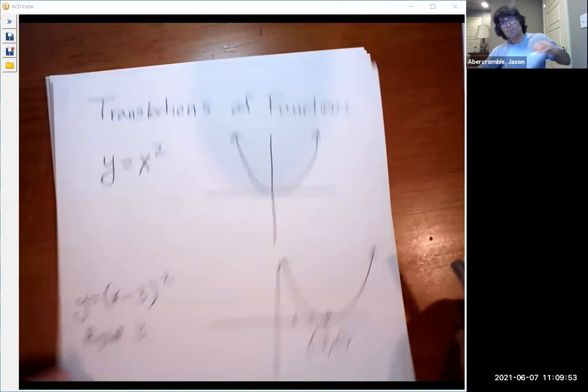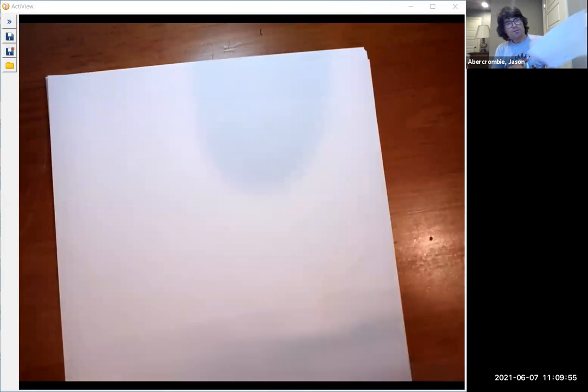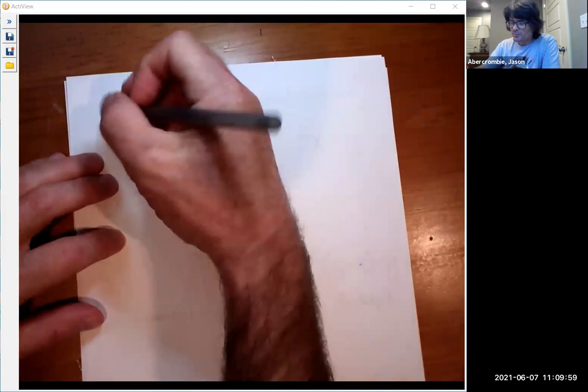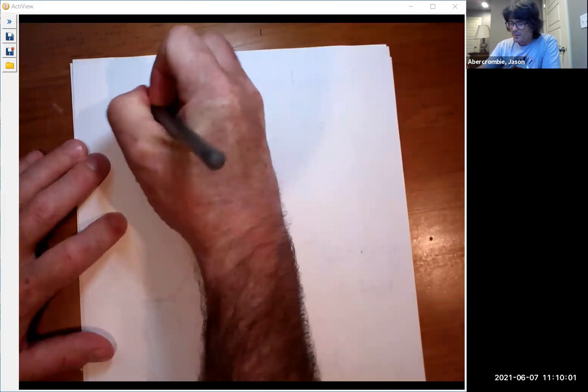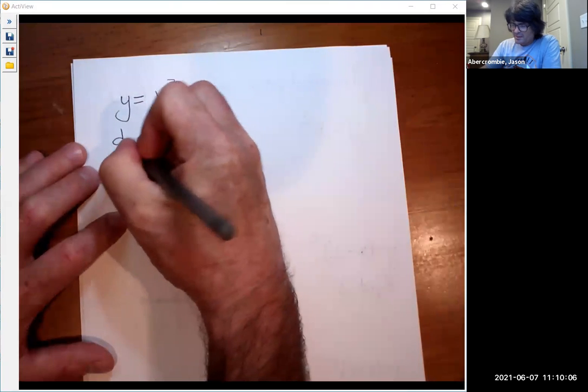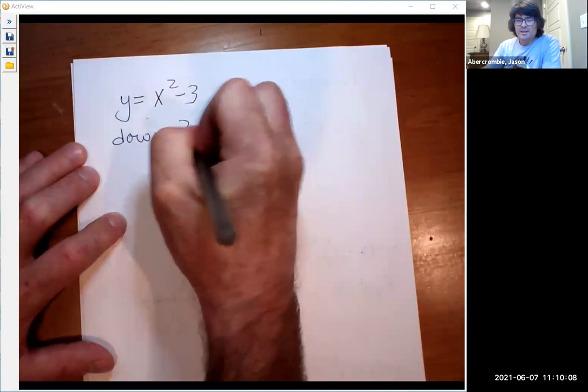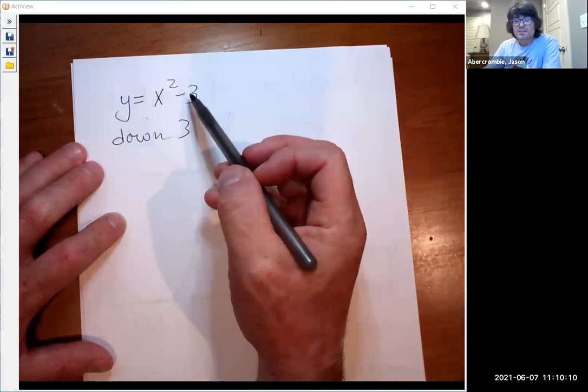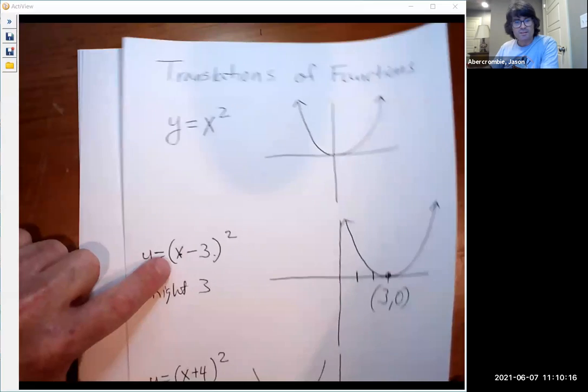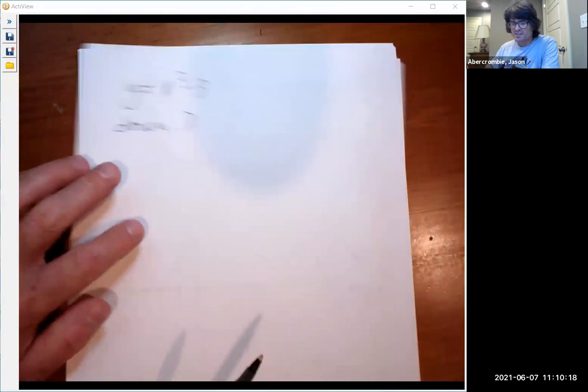Now let's do up and down. Then we'll look at some different functions that all kind of work the same way. So let's do y equals x squared minus 3. This is down 3. Anytime you have a plus or minus after the term that's squared, before we had it in parentheses squared, that was left and right.